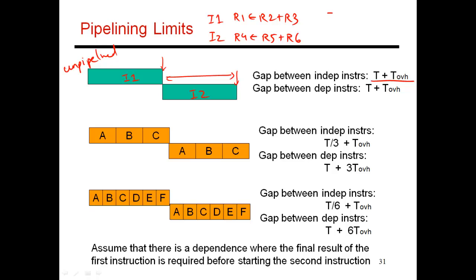Now let's take a pair of dependent instructions. Let's take I3 and I4, where I3 writes into R1 and I4 reads from R1. Again, I don't have any choice. So I'm going to do I3 over here and I'm going to do I4 over here. The gap between dependent instructions is exactly the same.